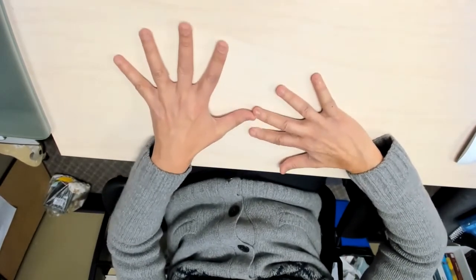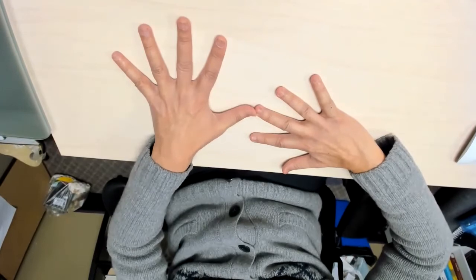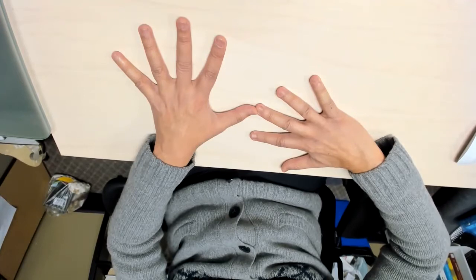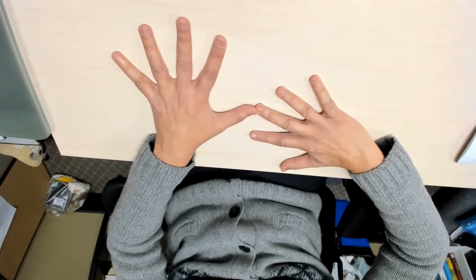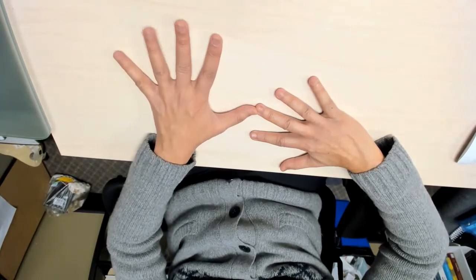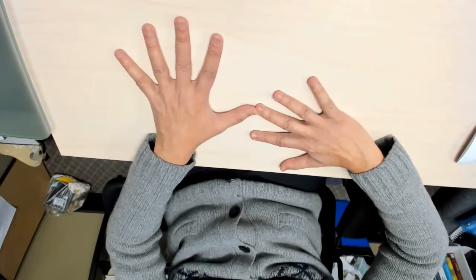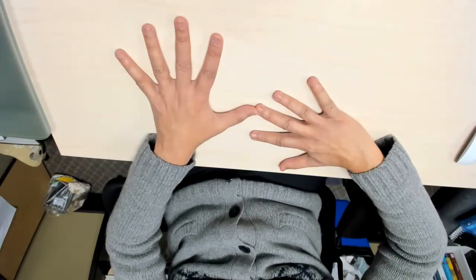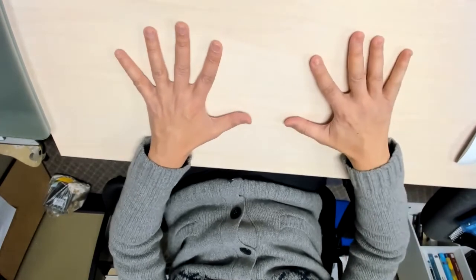And then we count the fingers that met and below them by 10. So 10, 20, 30, 40. And then on the left of the meeting fingers, we have 4, and on the right you have 2. So 4 times 2 equals 8, and then 40 plus 8 equals 48. And 6 times 8 equals 48.